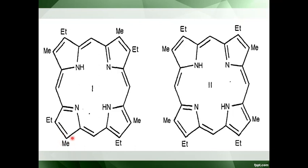Similarly, at this carbon, methyl group is attached in type 1, whereas ethyl group is attached in type 2 — in place of the methyl group, an ethyl group is present. The change in position of the ethyl and methyl groups takes place at carbon numbers 7, 8, 17, and 18. There is no requirement to learn the structure by drawing it. A simple way to remember the different types of porphyrin is to draw a line on your register — write the porphyrin name on one side and the groups on the other.